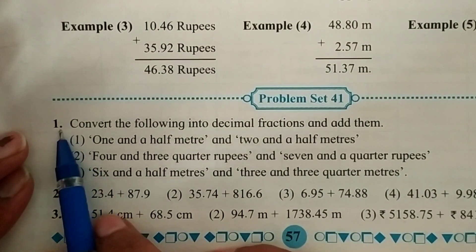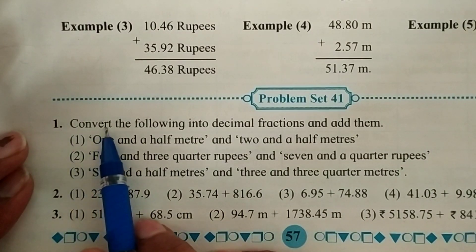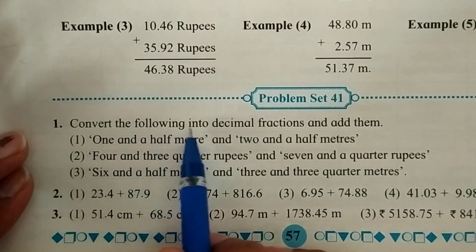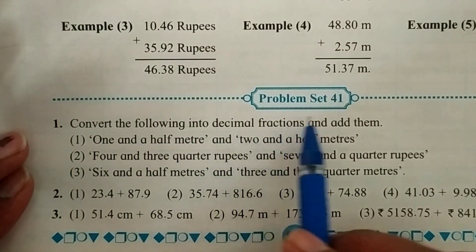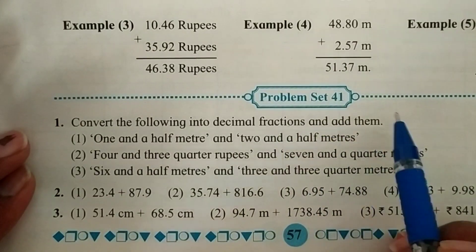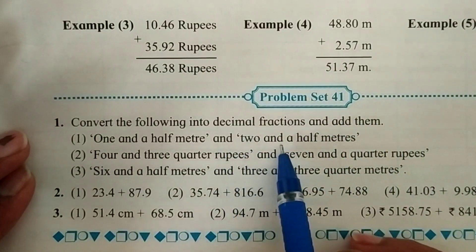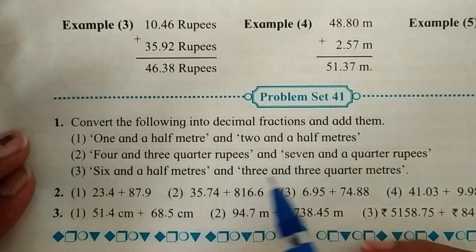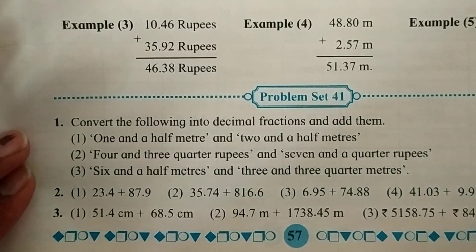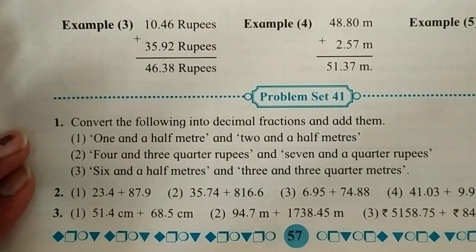The first question is: convert the following into decimal fractions and add them. We are going to convert the three given fractions into decimal fractions and then add them.